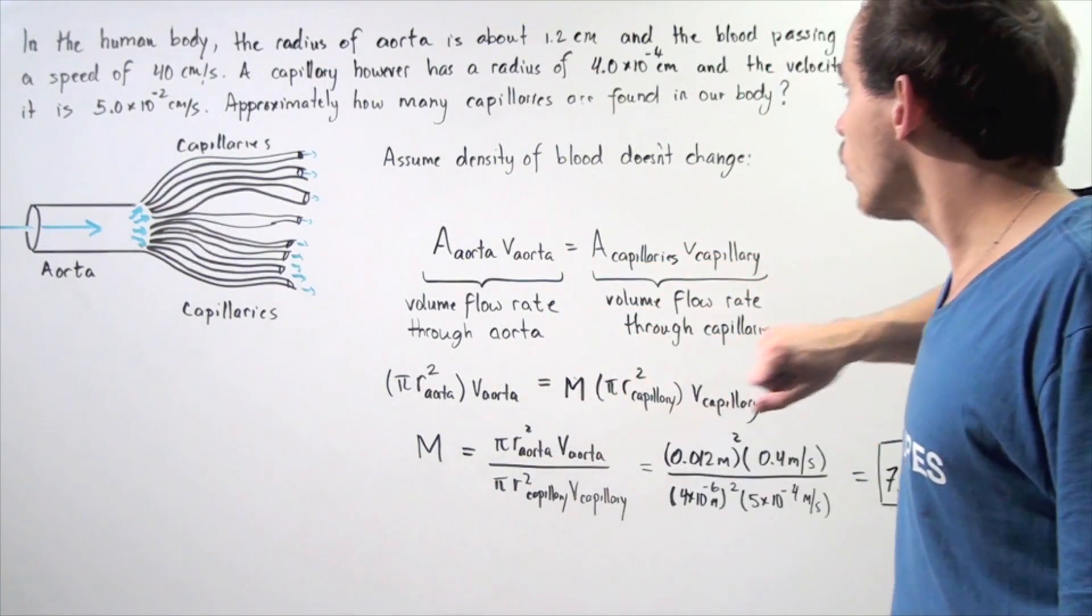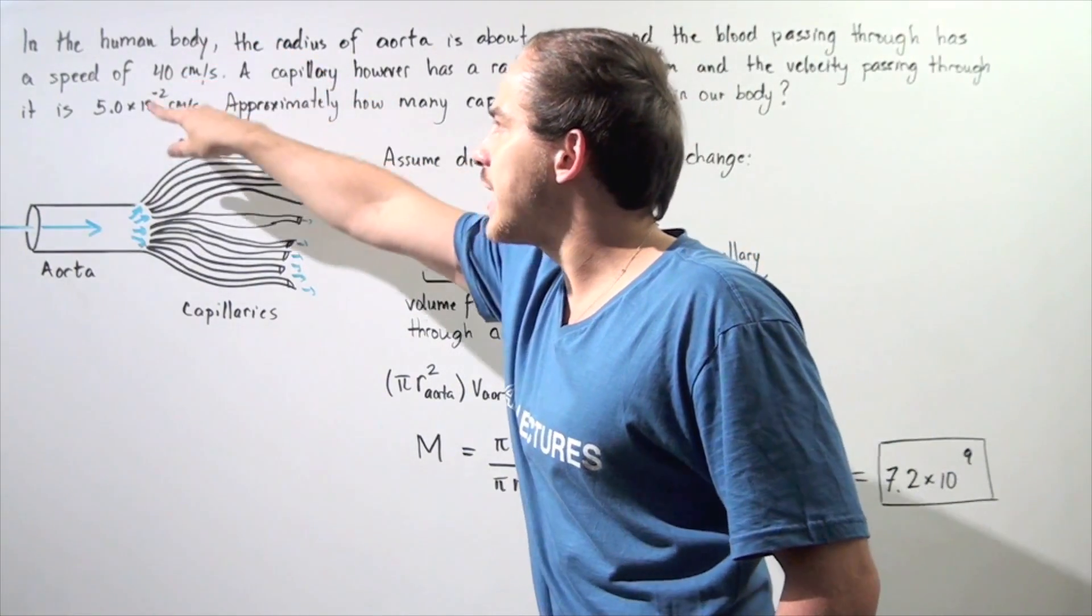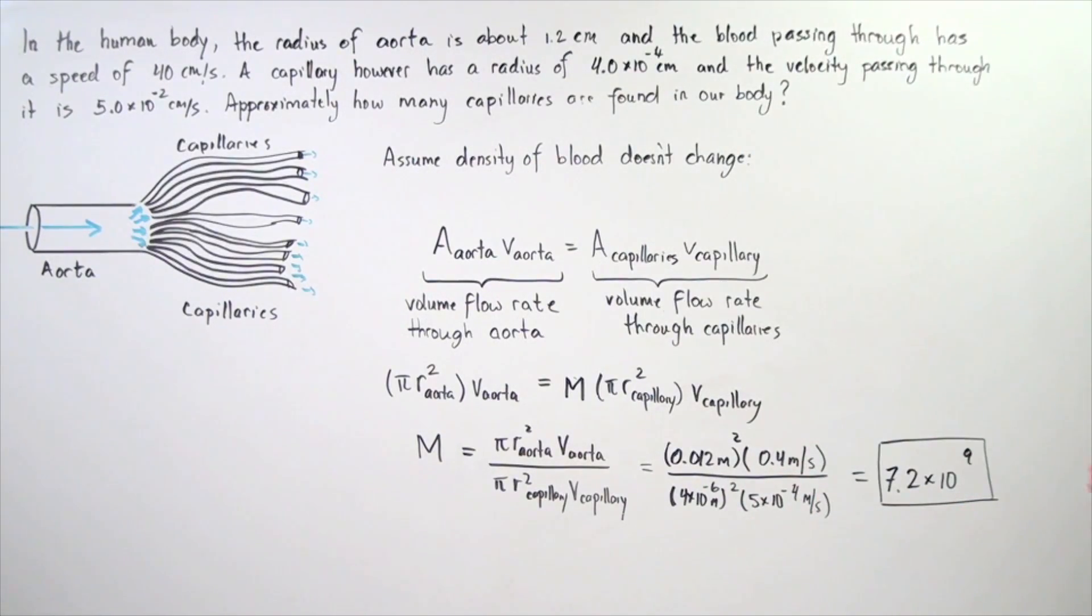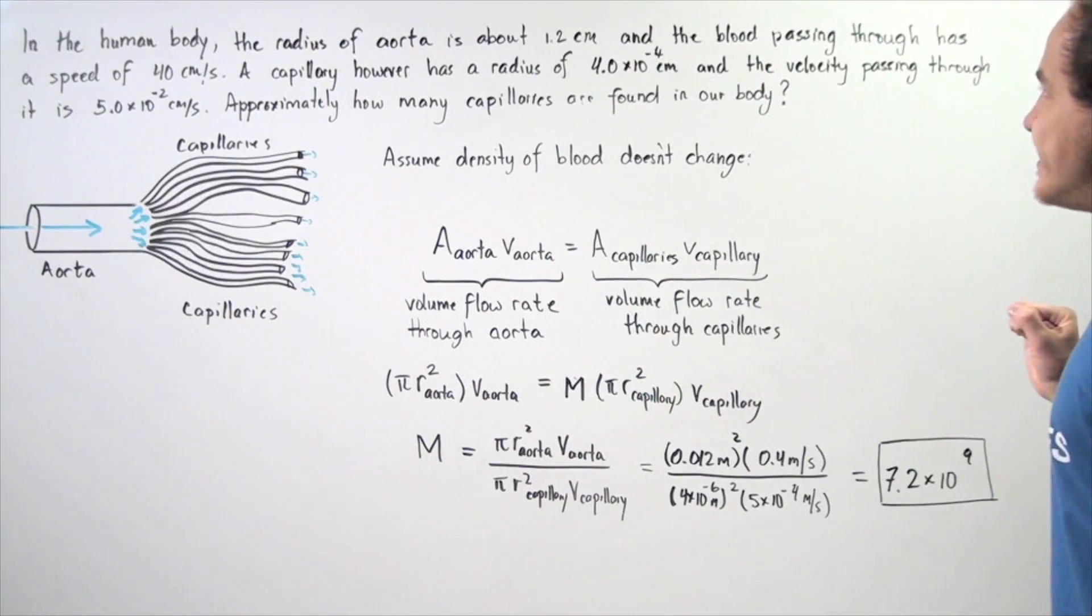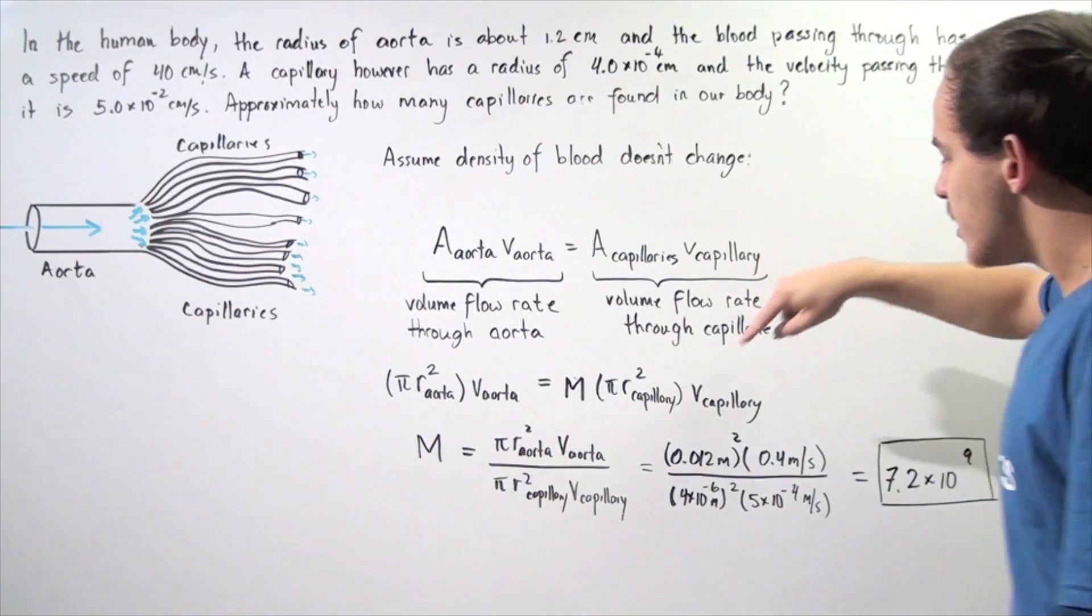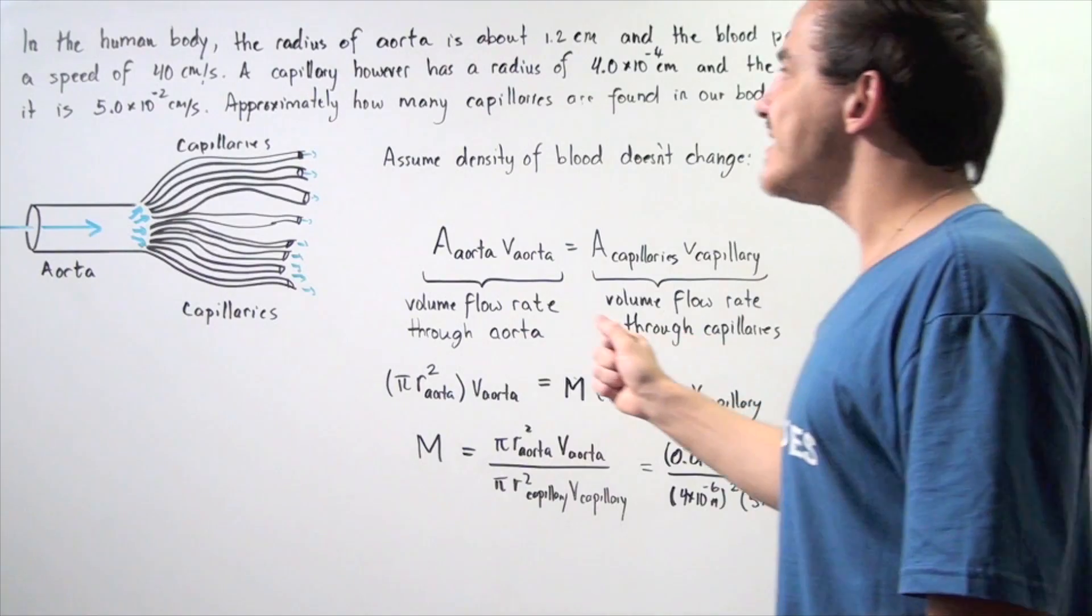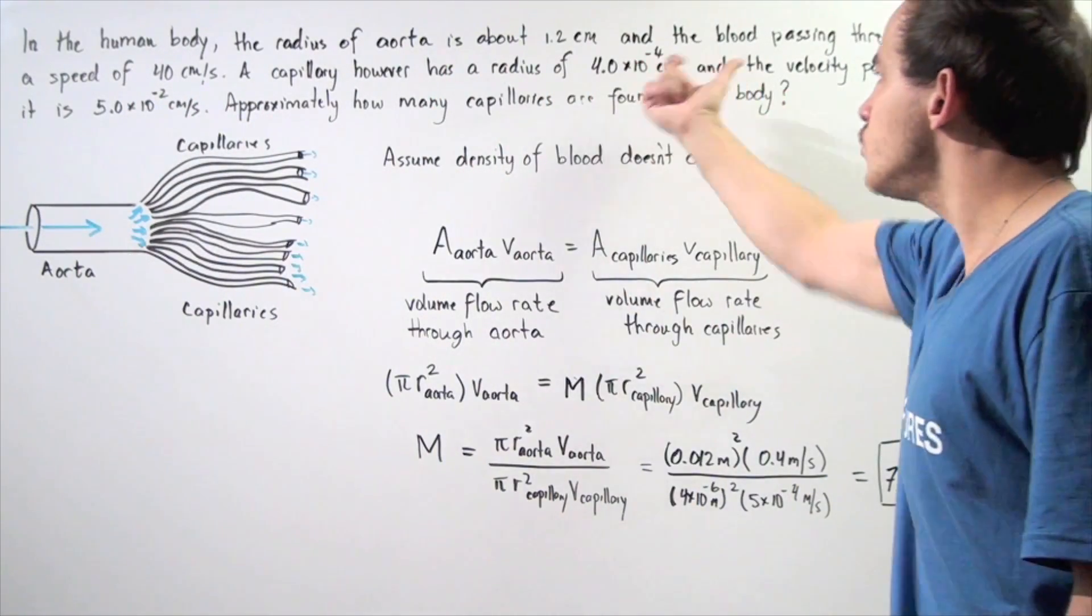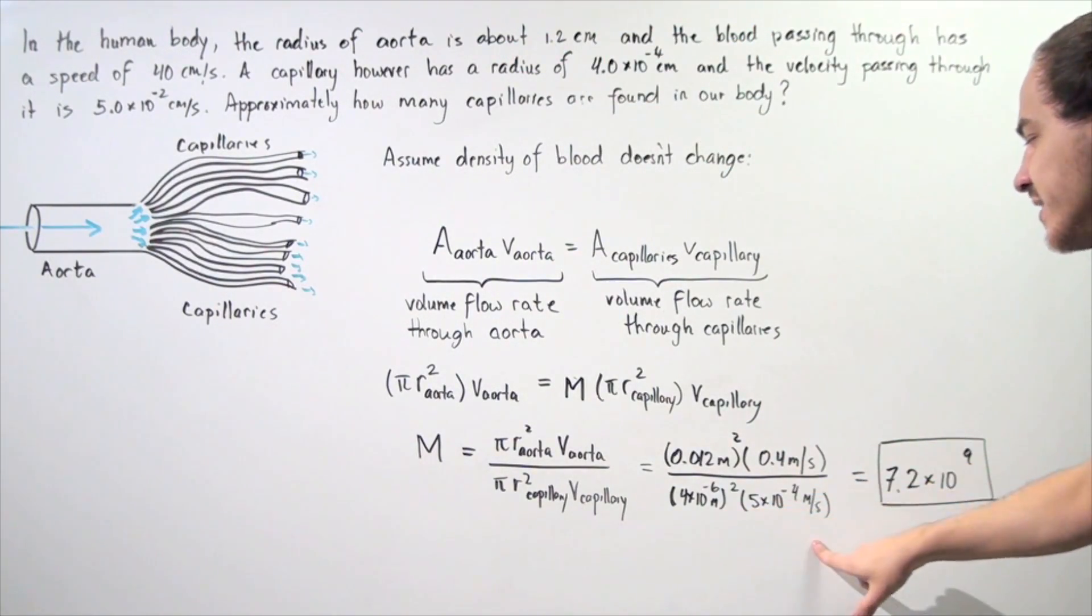Notice our velocity of aorta is 40 centimeters per second, so to convert that to meters per second, divide that by 100. We get 0.4 meters per second. What about our radius squared? The radius is 1.2 centimeters divided by 100, so 0.012 meters squared. And the bottom becomes, I take each respective quantity and divide it by 100 to convert it from centimeters to meters, and I get the following two quantities.